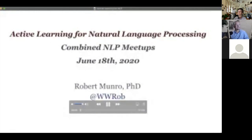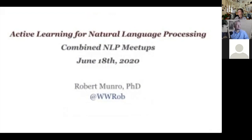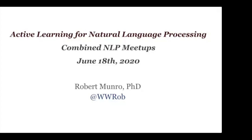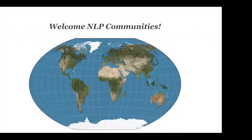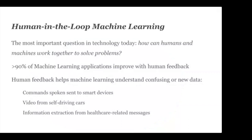Welcome to my talk on active learning for natural language processing. I actually grew up just outside of Sydney originally, so it's great to be talking to people in my old hometown. I've lived in England, worked for the UN Refugee Commission in West Africa, moved to the US to get my PhD at Stanford in natural language processing, and have worked in companies big and small since, including launching the first NLP products on AWS. Today I'm going to talk about the intersection of human and automated language processing — one of the most important questions in technology today: how can humans and machines work together to solve problems?